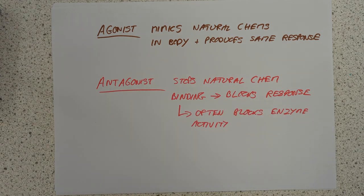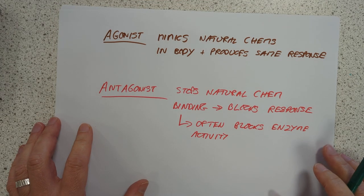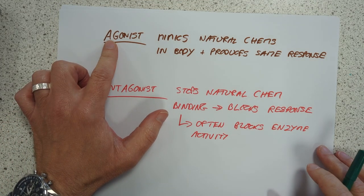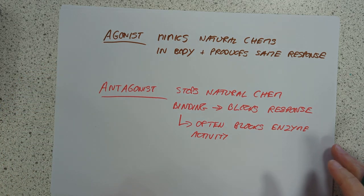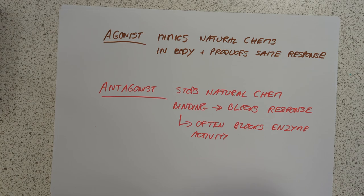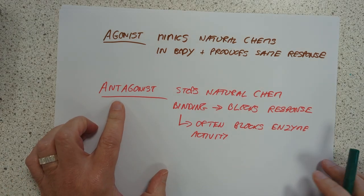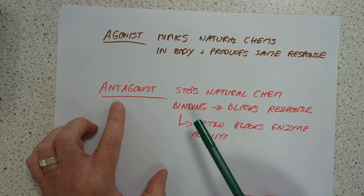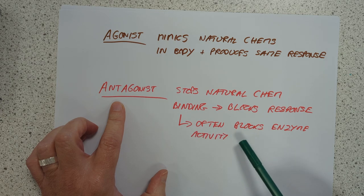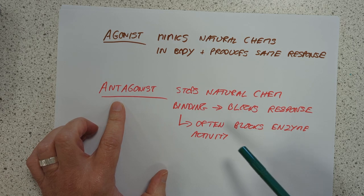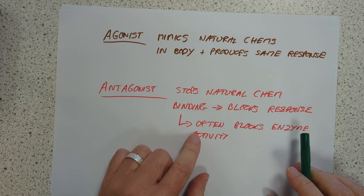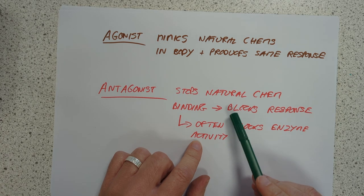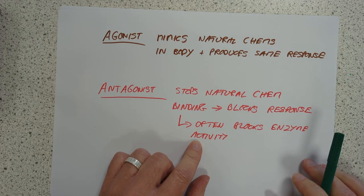We have a simple definition here. We have an agonist, which mimics natural chemicals in your body and produces the same response. And we have an antagonist — the opposite of it. It binds to a site, often binds to an enzyme, and stops the enzyme doing its normal thing, effectively blocking the body's response to these chemicals.